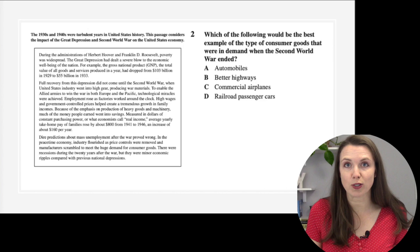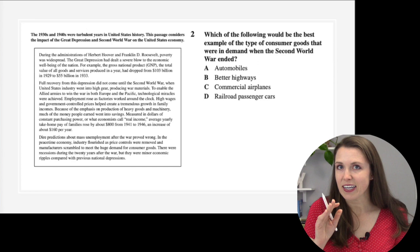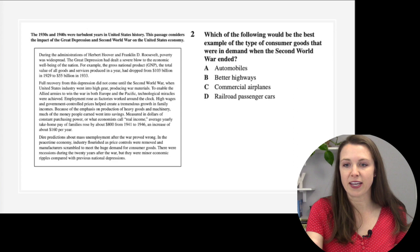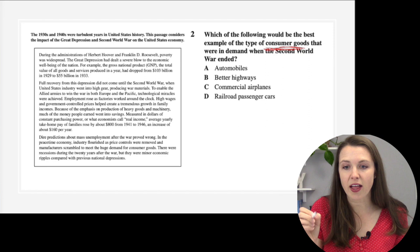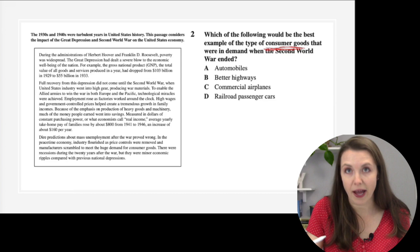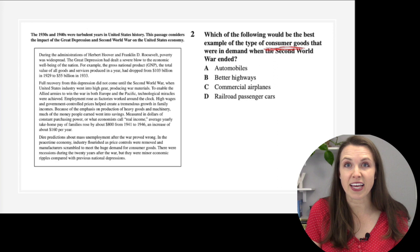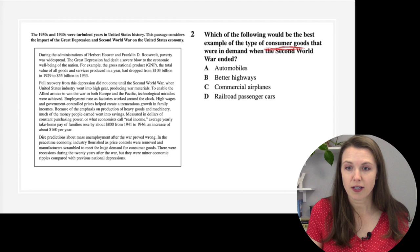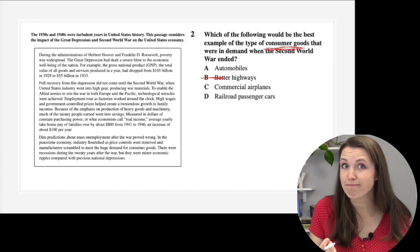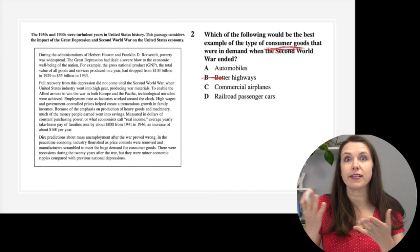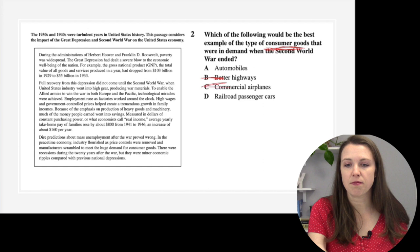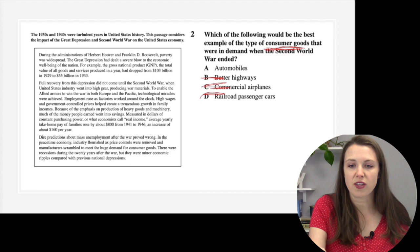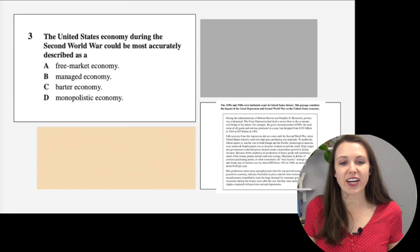Number two: which would be the best example of consumer goods in demand when the Second World War ended, around 1946? Consumer goods are things consumers can buy. Automobiles — absolutely, more and more people were buying automobiles during that time. Better highways? You can't purchase a highway — not a consumer good. Commercial airplanes? No, that's not something you purchase and own yourself. Railroad passenger cars? Same issue. The answer is A — automobiles.